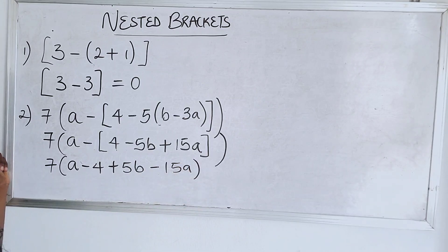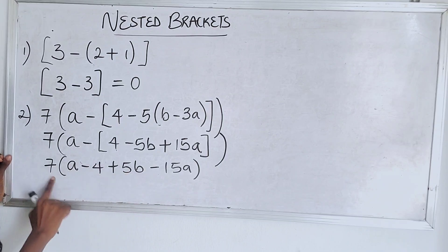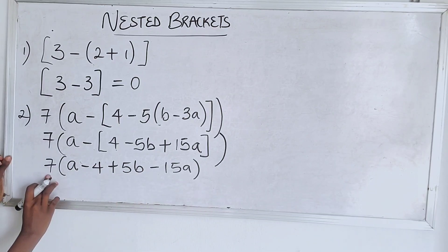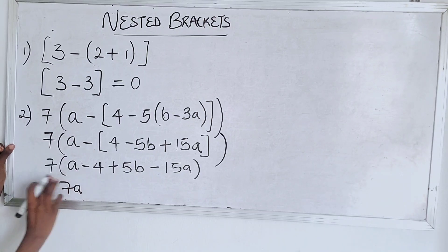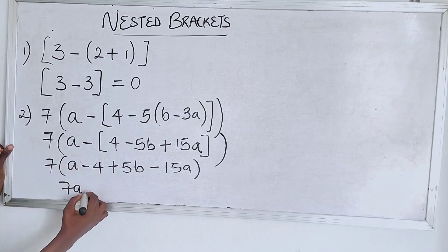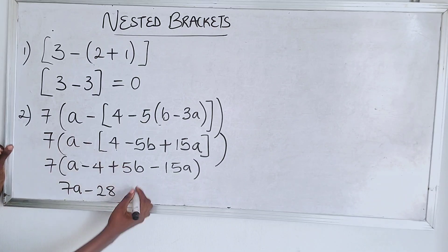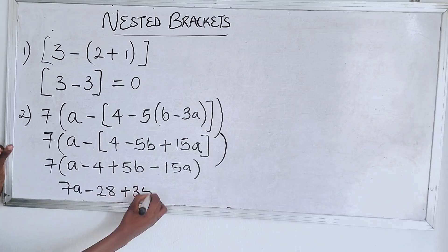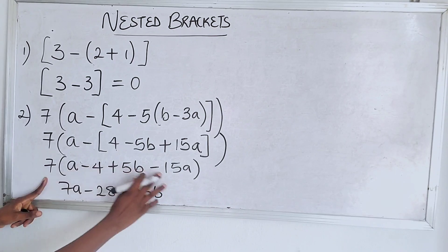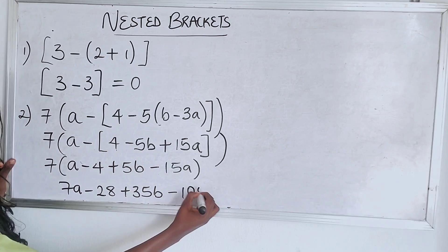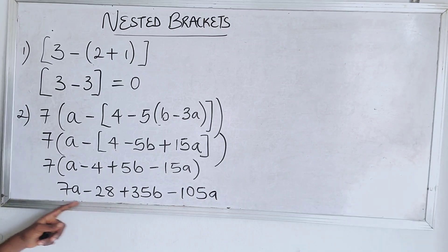Now this is your last bracket. Seven is going to expand this last bracket. Seven times a gives seven a; seven times minus 4 is minus 28; seven times plus five b is plus 35b. You have to know your multiplication table. Then seven times minus 15a is minus 105a.